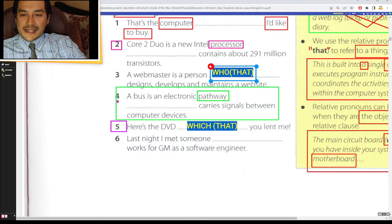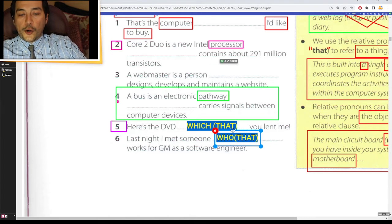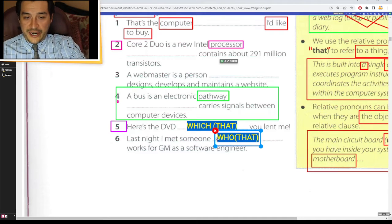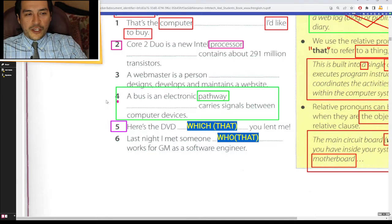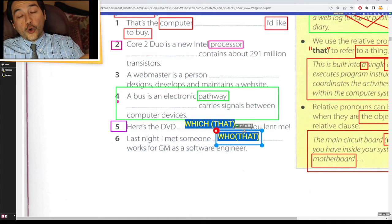Lastly, last night I met someone, a person, who works for GM as a software engineer. So this is how we use the relative pronouns, which or who. And this is also how we use that to refer to a person or a thing.